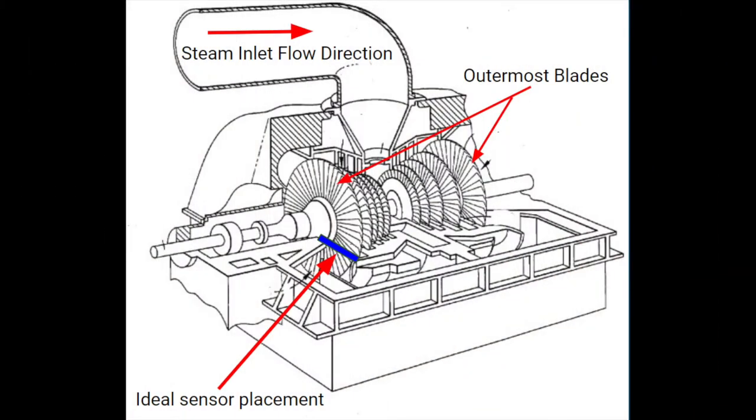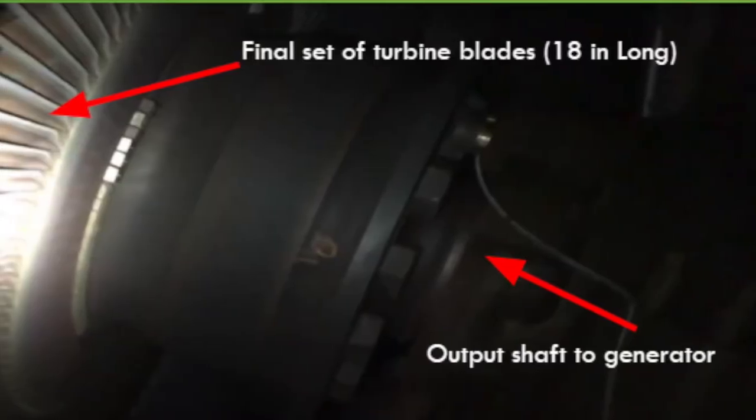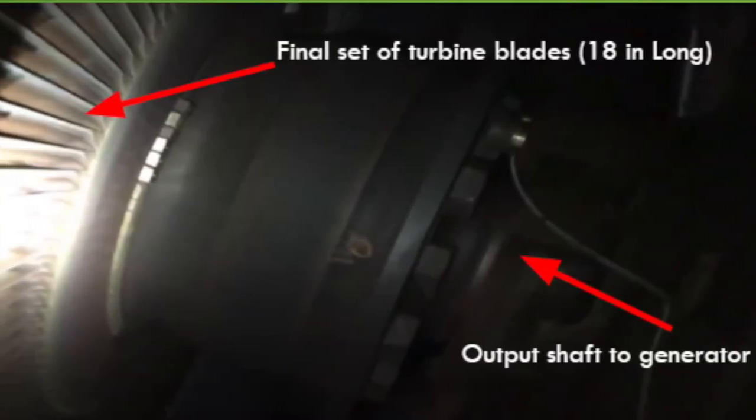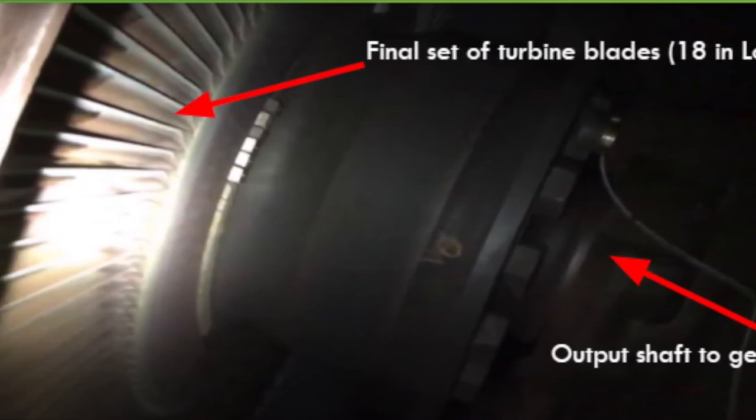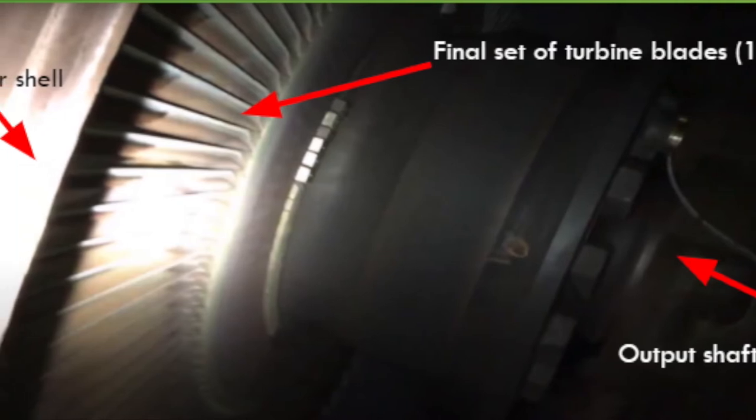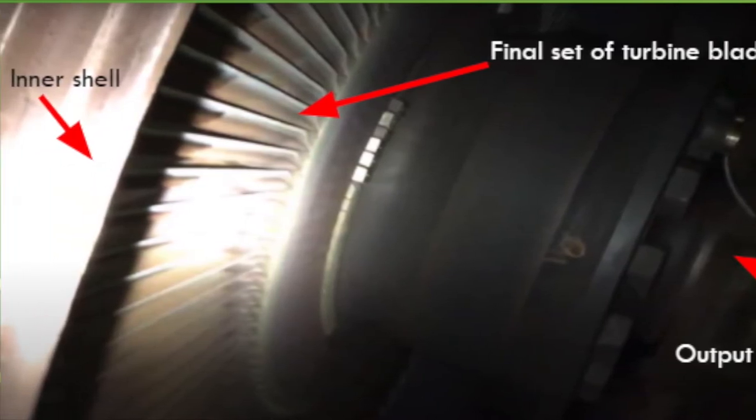Because the undesirable flow conditions happen particularly near the last set of turbine blades, we've been asked to create a sensor array to monitor the flow conditions at this outlet. The primary concern is reverse flow, and the device must be able to measure flow velocity in multiple directions. We'd also need an ability to determine when undesirable flow arises in real time, which will allow operators to quickly change turbine operation to prevent damage.